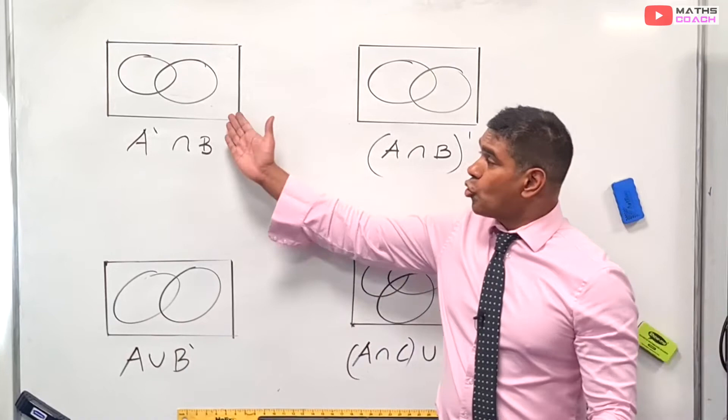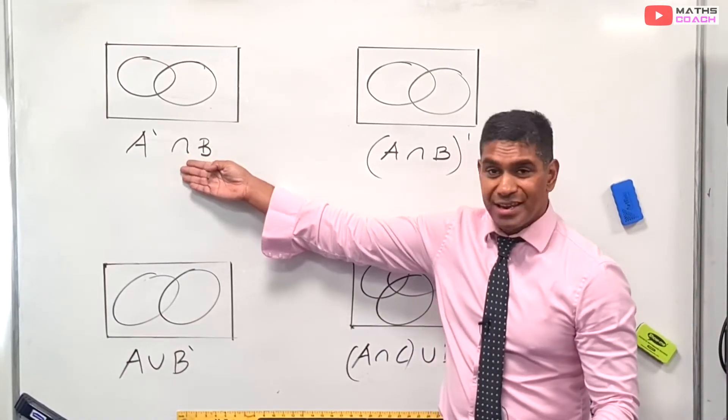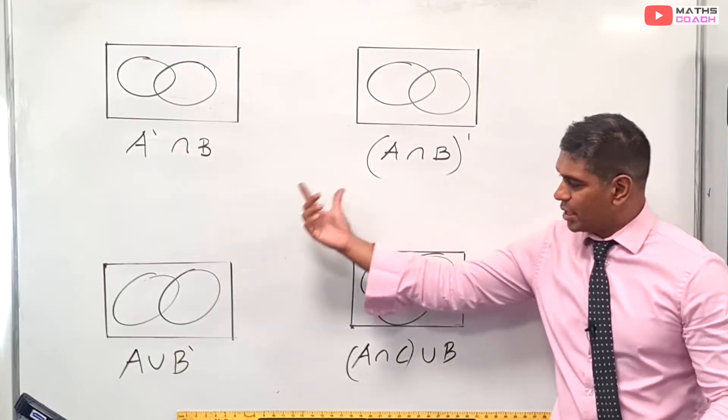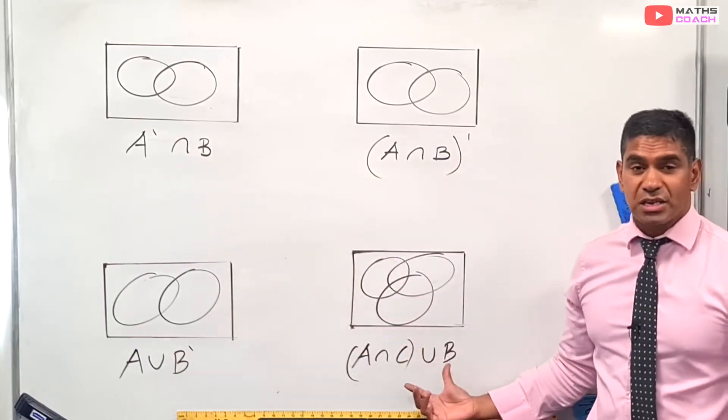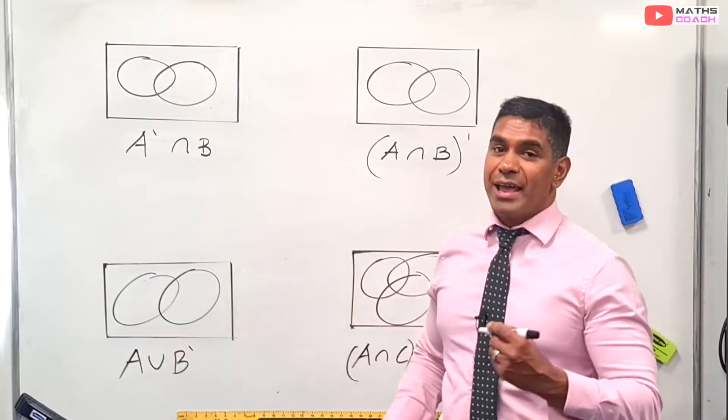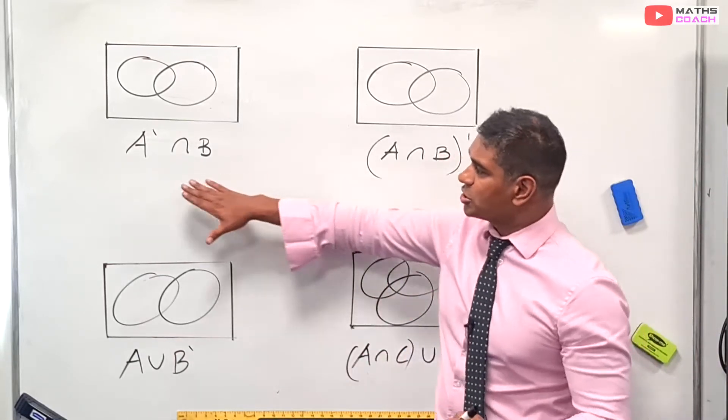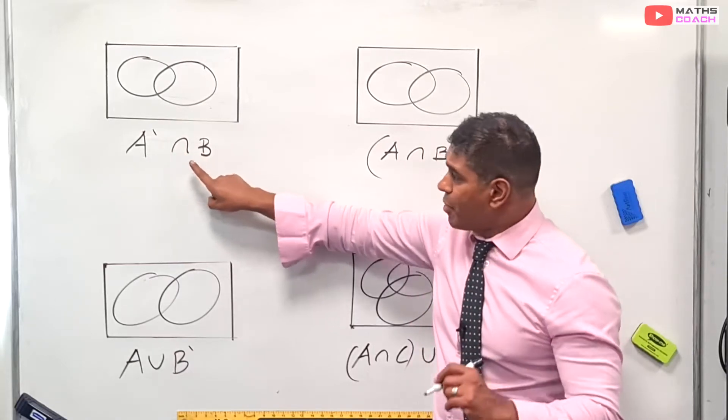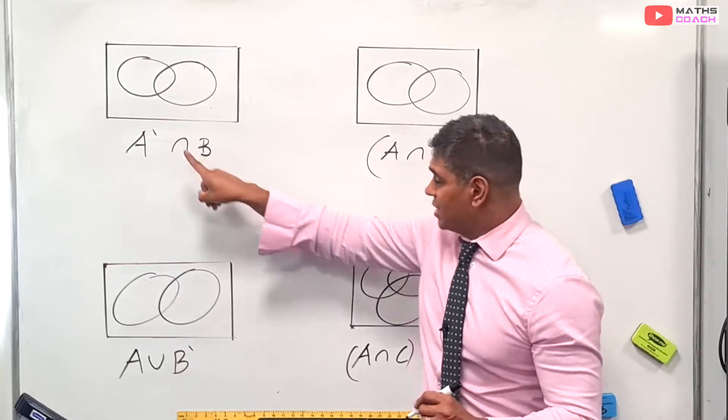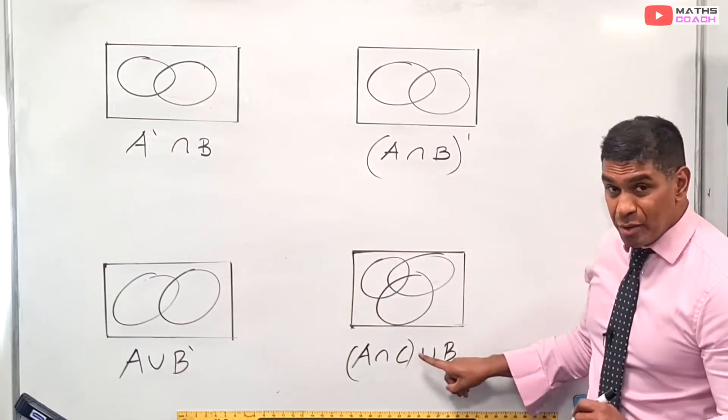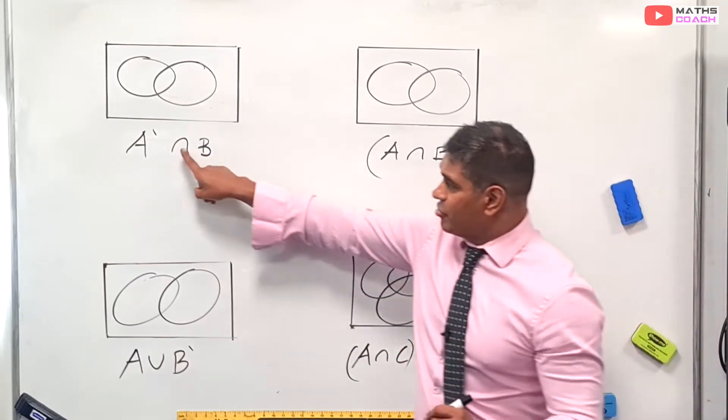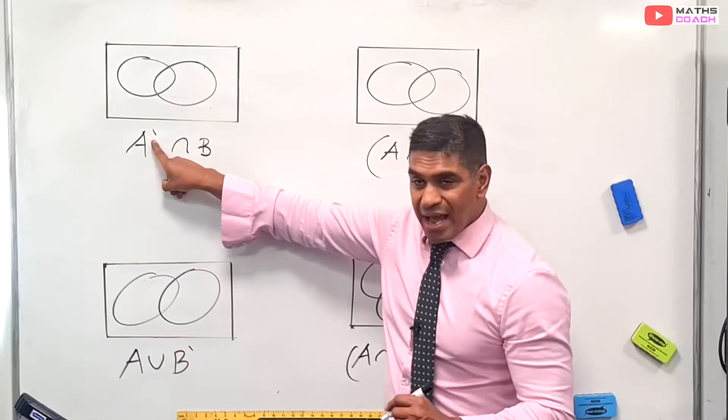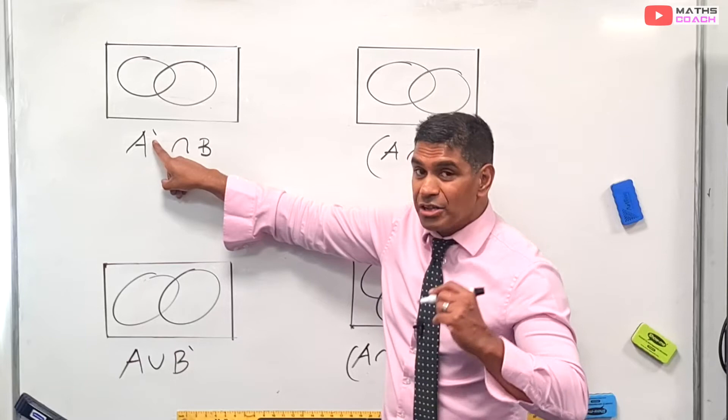So what we're going to do now is draw diagrams to represent given notation. And what I'm going to start you off with is some simple stuff and gradually build up to some harder stuff that you would have to tackle in your exams at the end of Year 13. So we're going to start off with A'∩B. Bear in mind that this ∩ is easier to cope with than the ∪, and we'll deal with that later on. Remember what we said earlier, the ∩ means intersection.